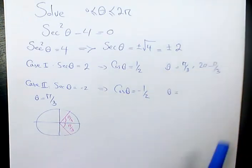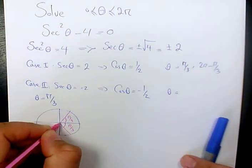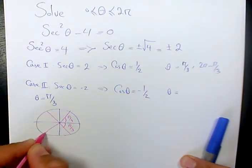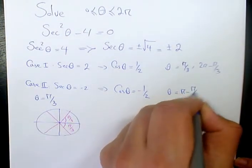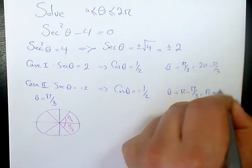The other one is cosine theta equals to negative half, which is going to be in quadrant 2 and quadrant 3, which will be pi minus pi over 3 and pi plus pi over 3.